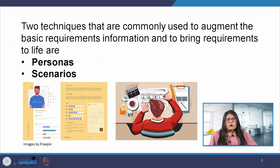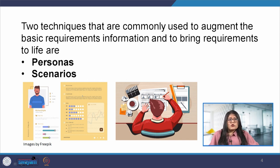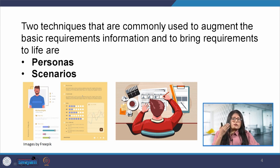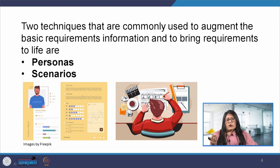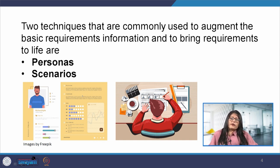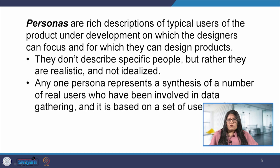Two techniques commonly used to augment the basic requirement information and bring requirements to life are personas and scenarios. These are often used together as they complement each other and bring out the realistic detail that allows the development team to explore the user's current activities, future user requirements, and futuristic visions of the technology. They can also guide development throughout the process cycle. Personas are rich descriptions of typical users of the product under development on which the designers can focus and for which they can design products.